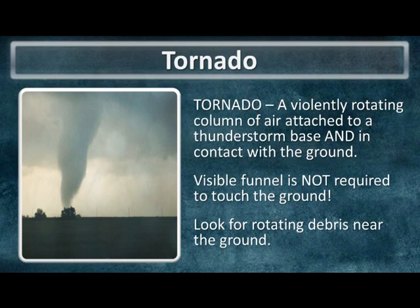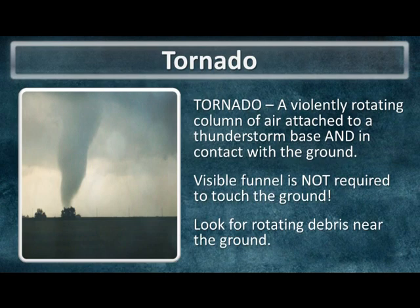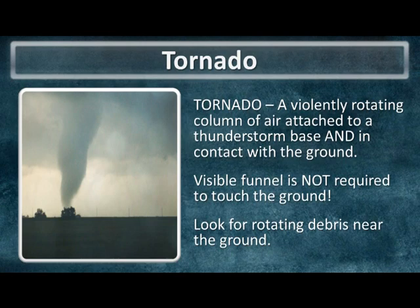Now, what is a tornado? A tornado is a violently rotating column of air which is attached to the base of the thunderstorm, usually the wall cloud, and it must be in contact with the ground. A visible funnel is not required to have a tornado. You just have to have a rotating circulation that is in contact with the ground. Usually you need to look for rotating debris near the ground, which could be swirling dust from a field, grass and leaves and twigs being lofted, or even debris from a building that the tornado has hit.